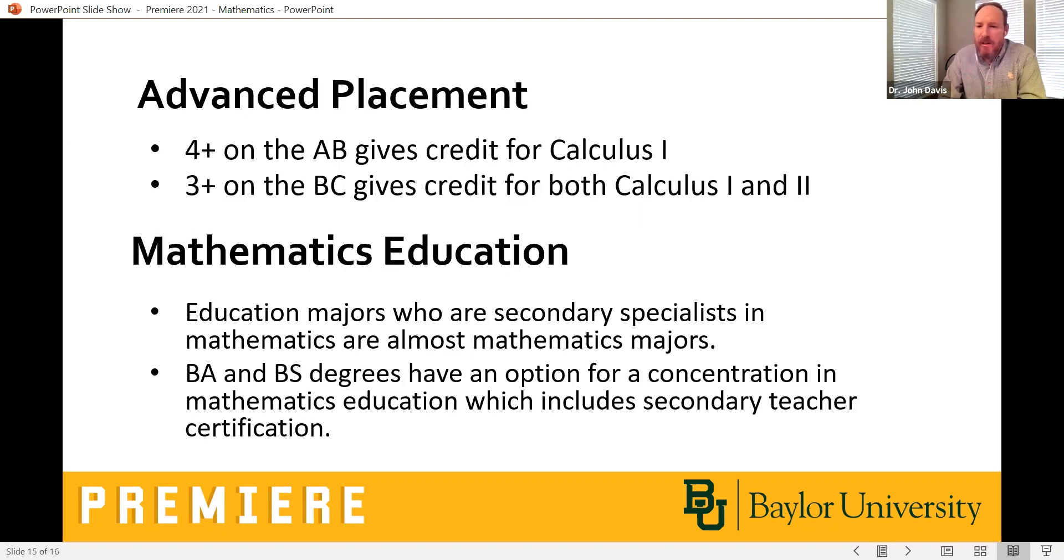A lot of people are interested in advanced placement. What Baylor does is if you get a four on the AB exam, then you get credit for calculus one, a four or five. If you get a three, four, or five, you get credit on the BC exam, you get credit for calculus one and two.